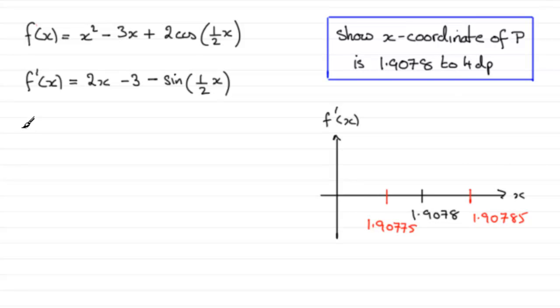So let's see what we get when we substitute, first of all, into f'(x), the value of x being that lower bound, 1.90775. Now if you substitute this value in here, make sure your calculator is in radians mode, so that when you put this in, you should find you get minus 0.00016 and so on, a negative value.